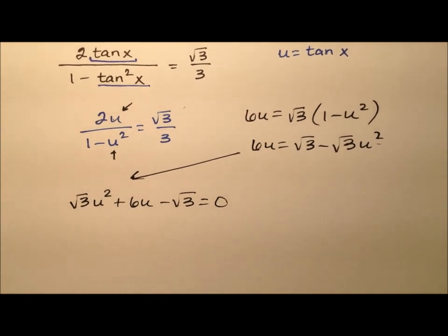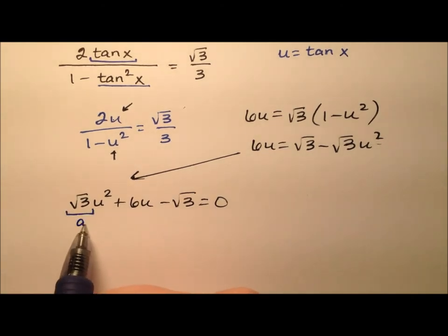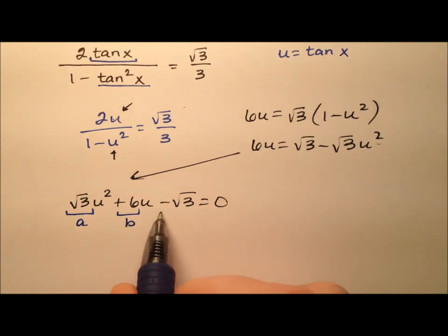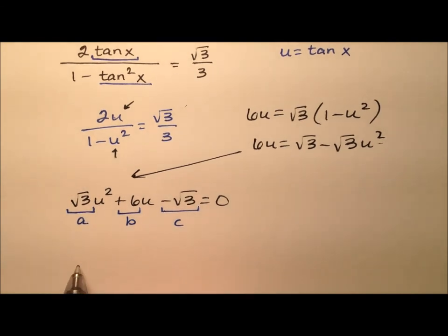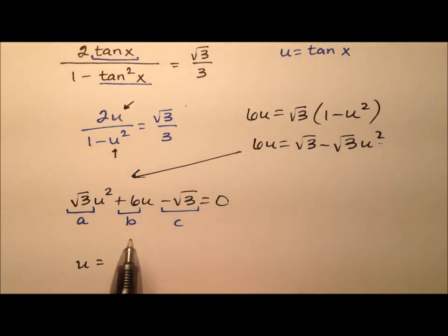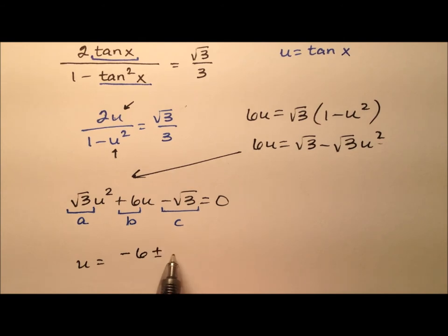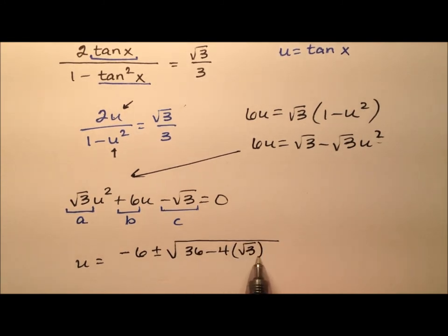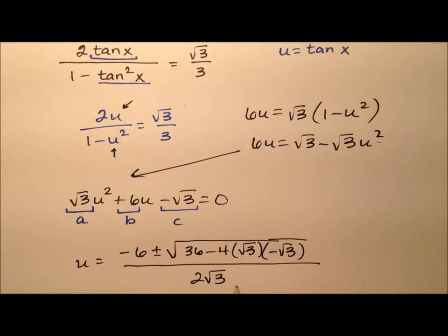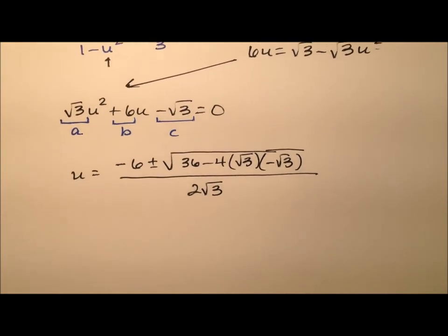So here is a nice quadratic equation that I can solve using the quadratic formula. The square root of 3 is my a value, 6 is my b value, and negative square root of 3 is my c value. So u — which is the tangent of 15 degrees — equals negative 6 plus or minus the square root of b squared, so 6 squared is 36, minus 4 times a times c, all over twice the a value.